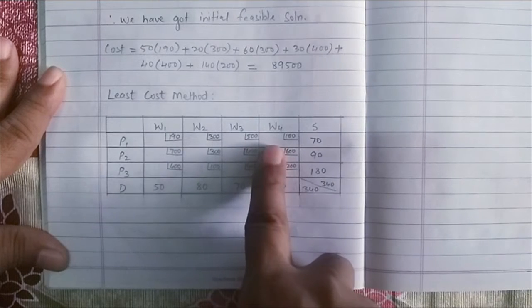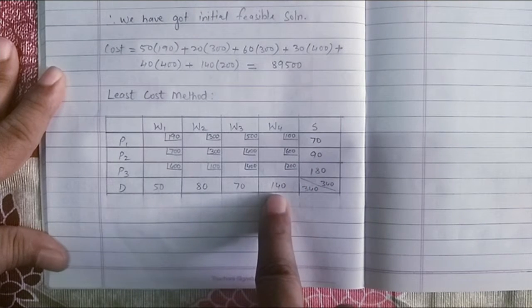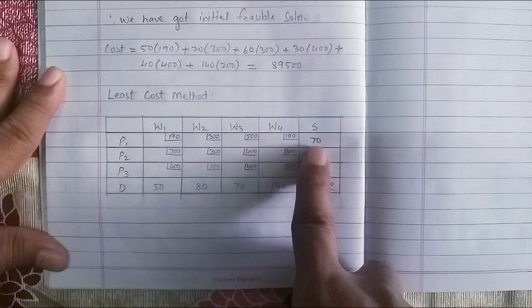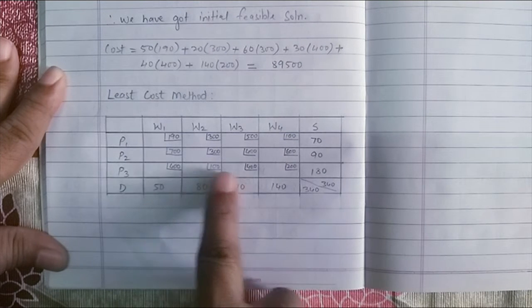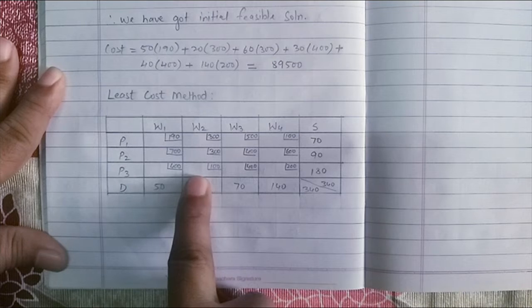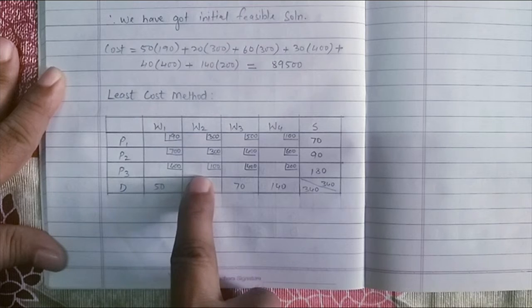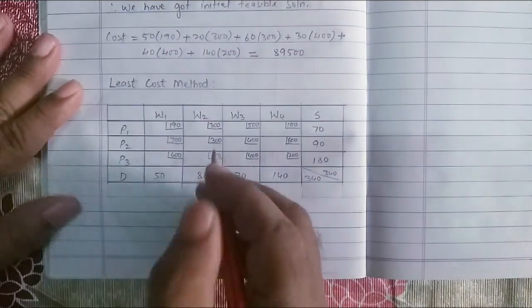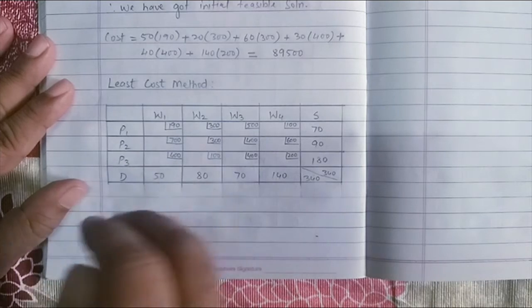Whenever there is a tie between the least cost, we have to check how many units can be supplied to that particular cell or can be allocated to that particular cell. Now, if you look at P1, W4, I have 70 in my supply and the demand is 140. So I can allocate only 70 units here. Whereas, if you look at P3, W2, my supply is 180 and demand is 80. That means I can assign or allocate 80 units in this cell. Because I can allocate more units in this cell compared to this one, I will go for P3, W2 as my first cell where I will do the allocations. In this cell here, I will allocate the least of the two values 80 and 180. Demand is 80. So I will put 80 here.